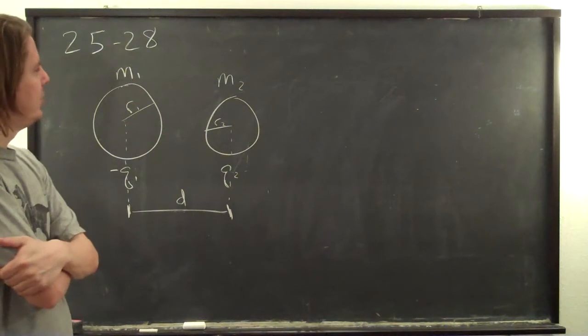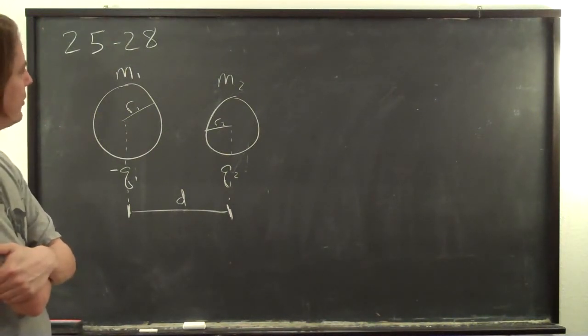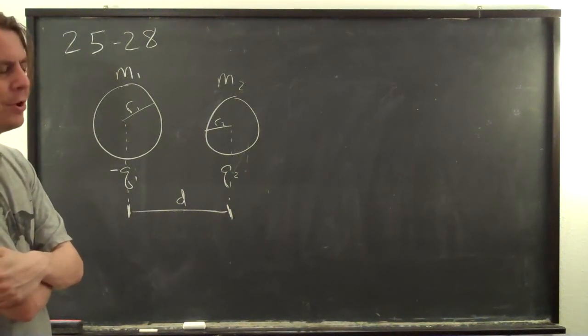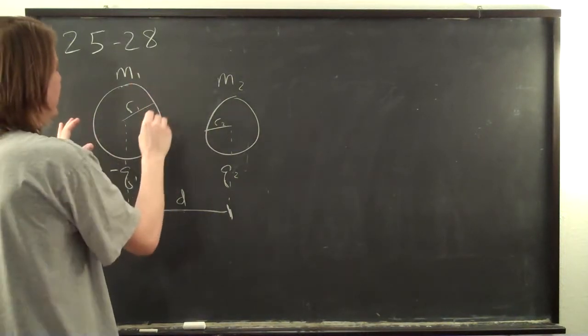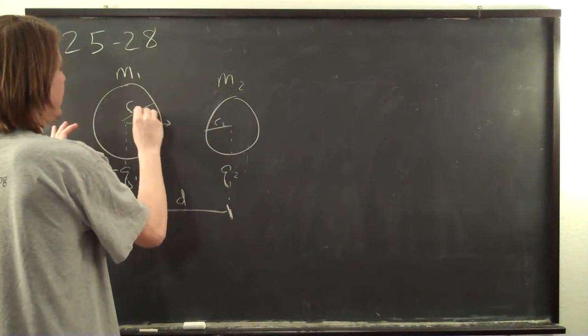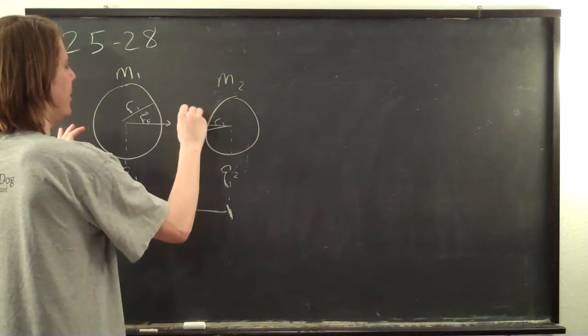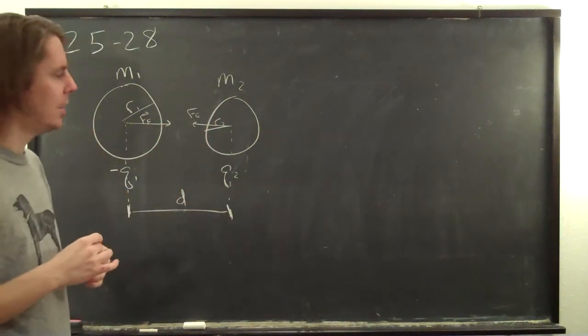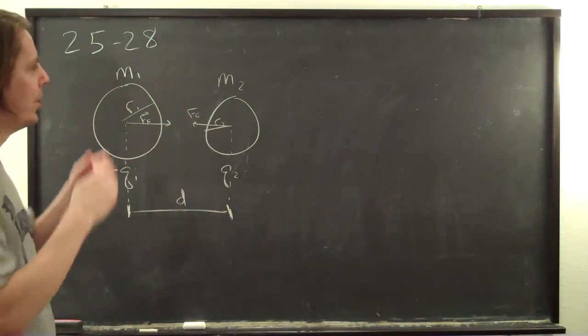One thing to realize is you don't know any of these numbers. You're doing all of this symbolically, but you do know that the masses are different. They're going to experience the same force, F electrostatic, but with different masses, they'll accelerate differently. So they'll have different velocities, so they won't even hit in the center. So you can't really assume too much.